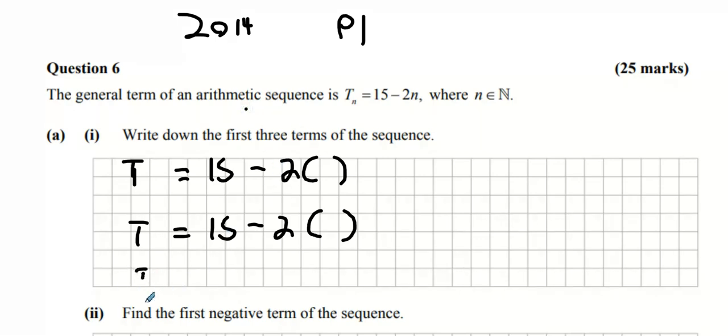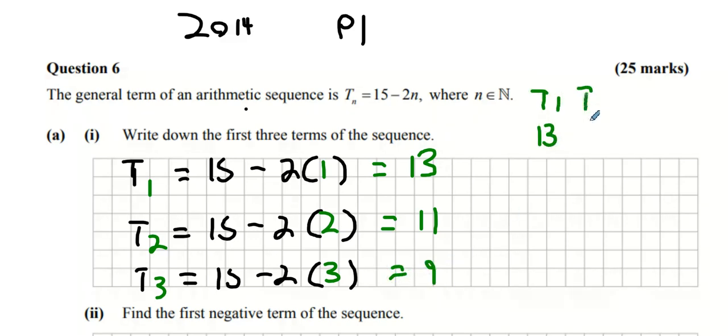So all we gotta do is the following: put in the number one here, number two here, number three here. First answer is 13, second answer is 11 when you use your calculator, and the third answer is 9. This means your T1 which is your first term is 13, your T2 which is your second term is 11, and your T3 is 9.